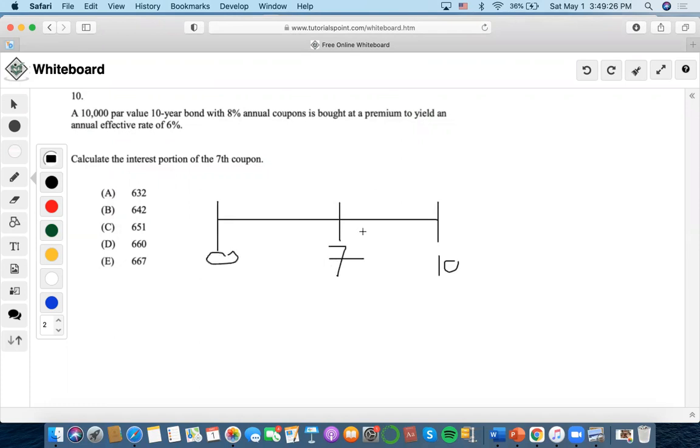Calculate the interest portion of the seventh coupon. Well, the first thing that I would do is assume that the par value will be completely paid out by the end of 10 years.